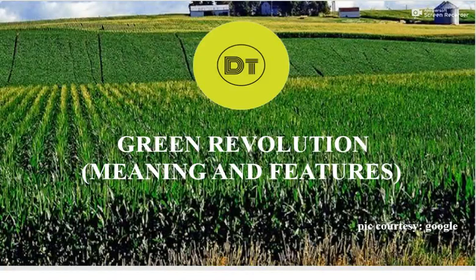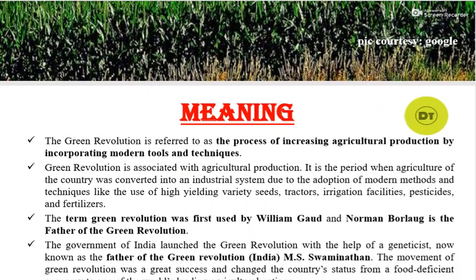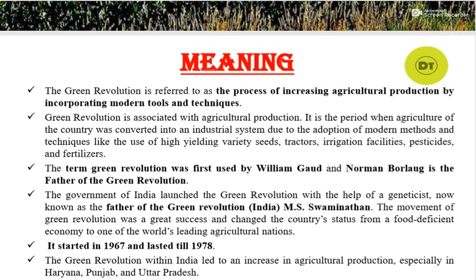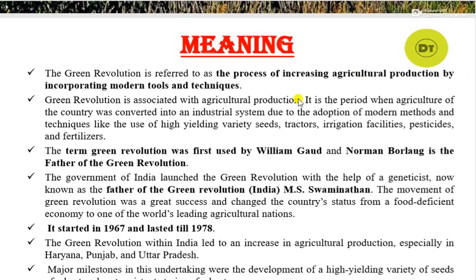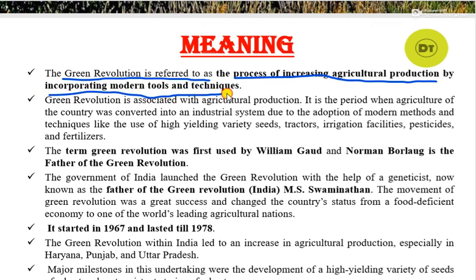In this video we are going to learn about the meaning and features of green revolution. Green revolution is referred to as the process of increasing agricultural production by incorporating modern tools and techniques.